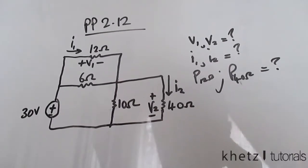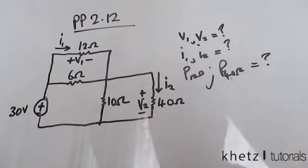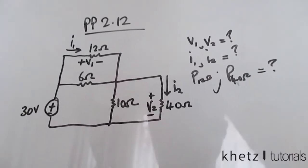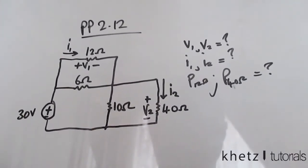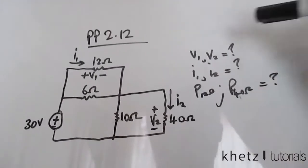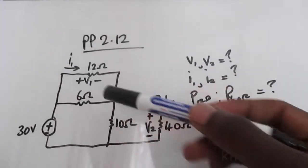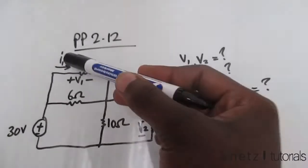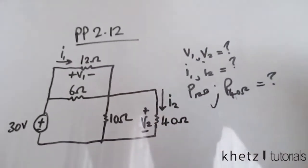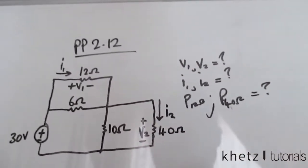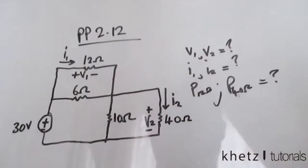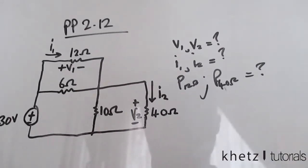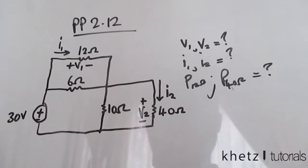Welcome to CATS Tutorials. In this video we're going to be doing practice problem 2.12. The question asks us to find v1, v2, i1, and i2, as well as the power dissipated in the 12 ohm and the 40 ohm resistors.